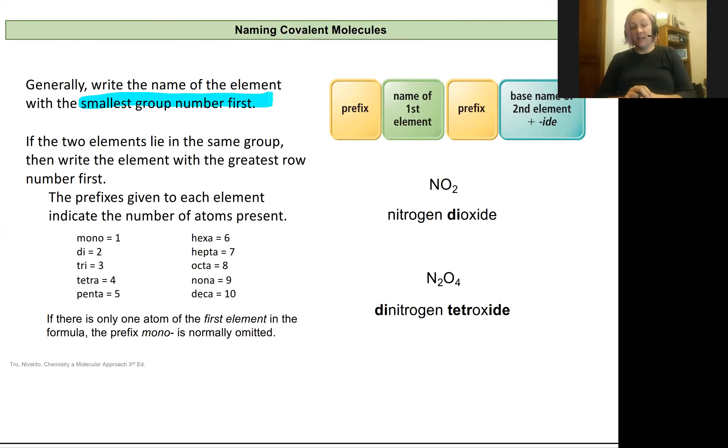Then we're going to give the name of the element a prefix, and that prefix is going to correspond to the number of atoms present. The prefixes are going to look the same as the hydrate prefixes we used earlier, except we won't have the hemi option because we would not have half of an atom in a covalent molecule. But mono, di, tri, tetra, penta, hexa, hepta, octa, nona, and deca are our prefixes that we're going to use in covalent naming.